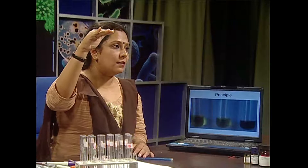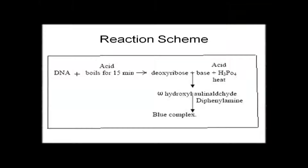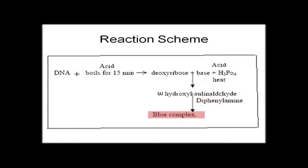So the glycosidic bonds by which the bases are attached are cleaved, and the nucleotides are depurinated. The phosphodiester links are also broken and deoxyribose sugar comes out. This particular deoxyribose sugar is acid hydrolyzed and is converted to omega-hydroxylavalulinic aldehyde.